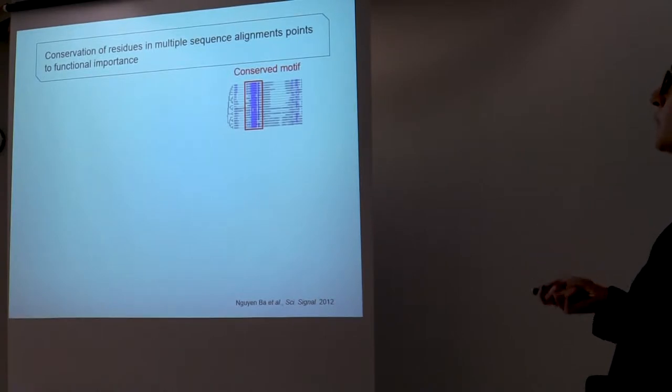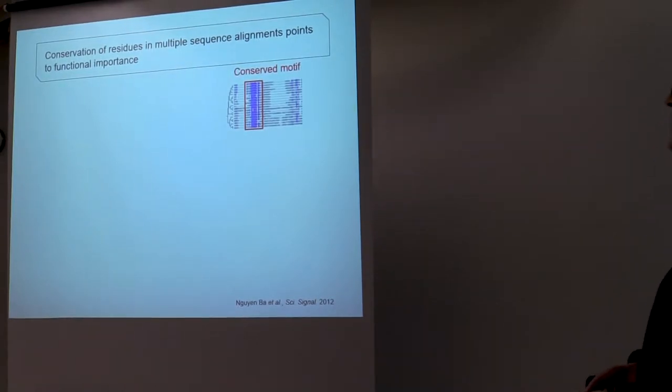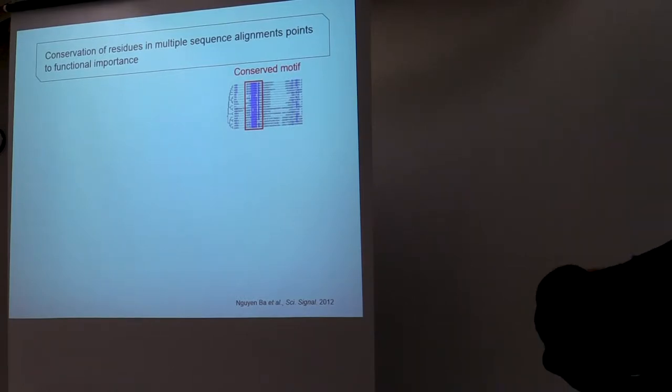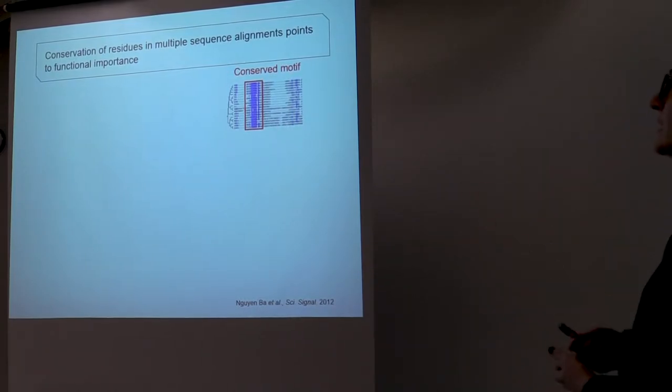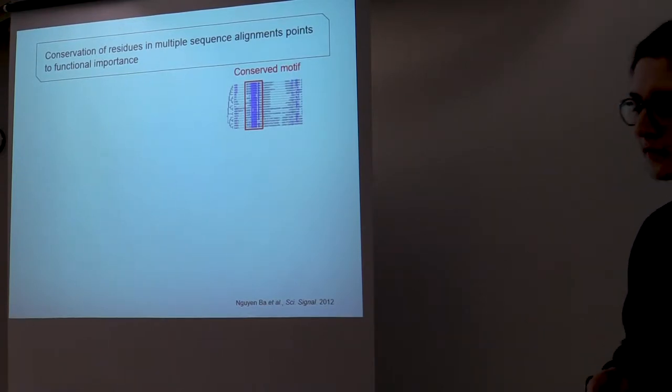Well, we know that usually when we're looking at proteins and trying to do functional analysis of them, we look for these conserved residues in multiple sequence alignments. So an example here is in this alignment, you can see there's a motif here that's very well conserved, so we would ascribe or hypothesize that this region of this protein has some important function.